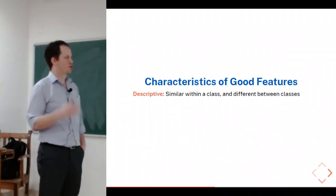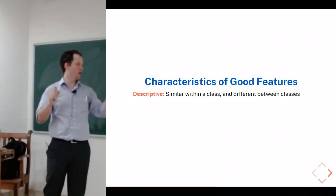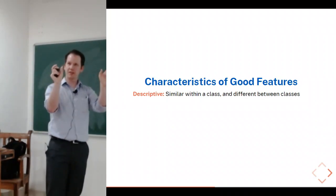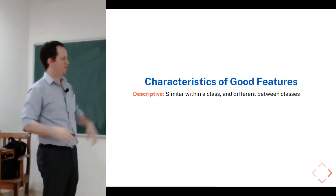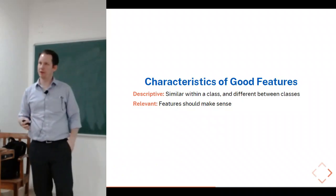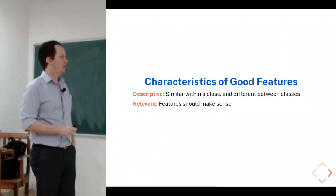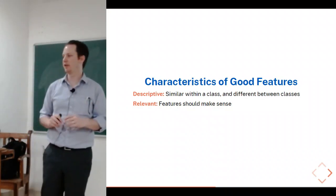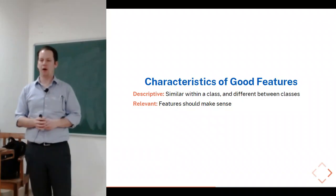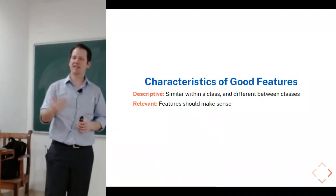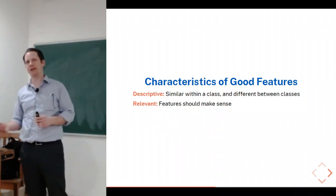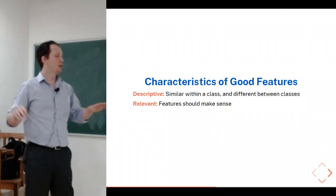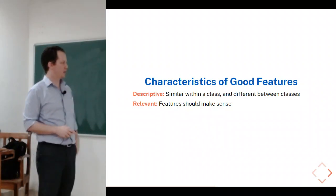In general, you want features that are descriptive — similar within a class and different between classes. In histogram terms, that means small standard deviations and means that are far apart. You want them relevant to the problem. In healthcare, sometimes features are technically good at separating classes but aren't relevant — for example, if high-risk patients are scanned earlier in the day, time of scan might correlate with malignancy but doesn't actually make sense as a predictor. You need to double-check that extracted features are meaningful.